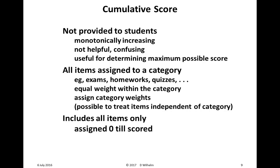Cumulative score I do not provide to students — it's not really that helpful, it tends to be confusing, and it monotonically increases starting from zero up until the end of the semester. It is useful for determining the maximum possible score, which I'll show later. All items are assigned to a category, as with the current score — exams, homeworks, quizzes, whatever else — with equal weight within the category and assigned category weights. It is possible to treat items independent of category, but that's a lot of work and somewhat error-prone. All items are included and are assigned a zero value until scored.